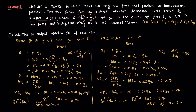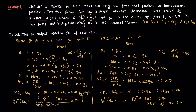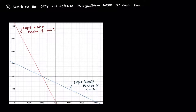These are the two output reaction functions for each firm, and we'll see how they factor in to solving the Cournot equilibrium. If we graph these two linear functions, the red line is the ORF of firm 1 and the blue line is the ORF of firm 2.